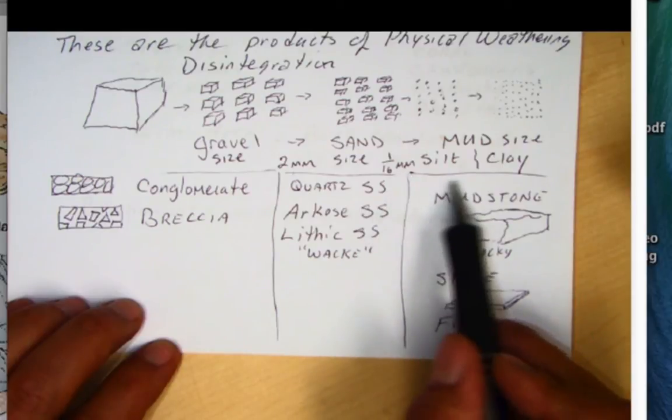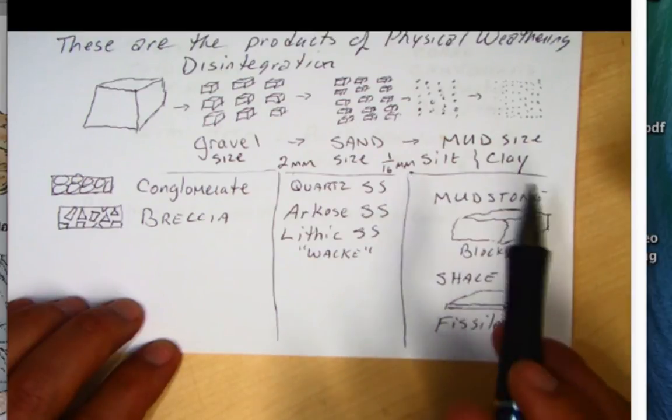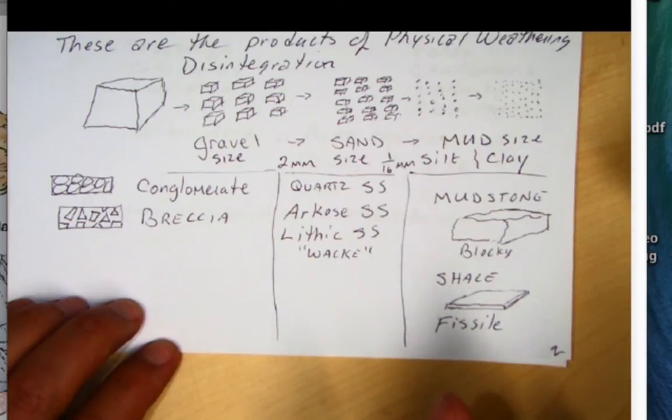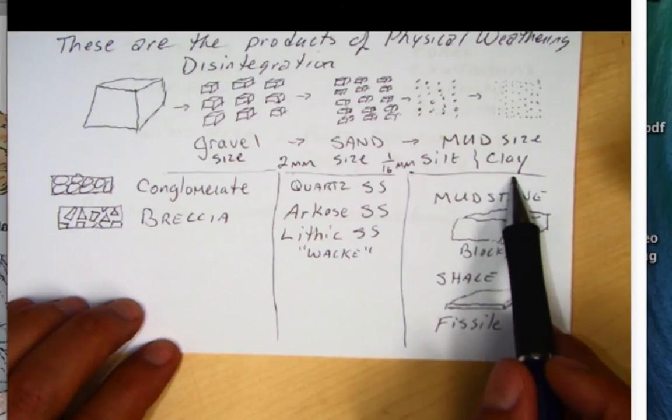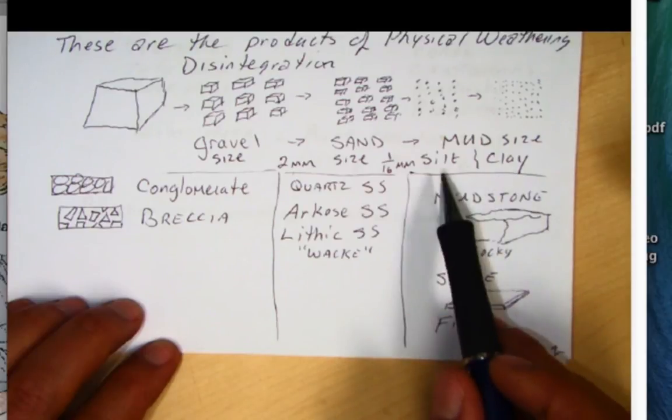So anything finer, this mud size is too fine, too small to see with a naked eye. You would need some sort of magnification to see it. And in this category, we do talk about silt and clay. Just remember that clay is finer. Silt is going to be gritty.